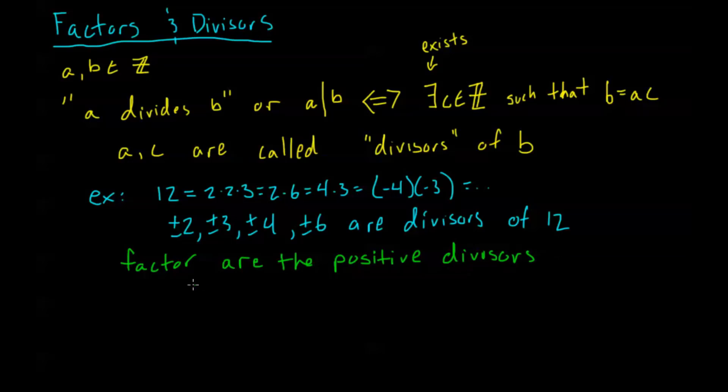So in my example here, 2, 3, 4, 6 are factors of 12. Okay, so that's the distinction. When we talk about a factor, we're always talking about a positive integer.